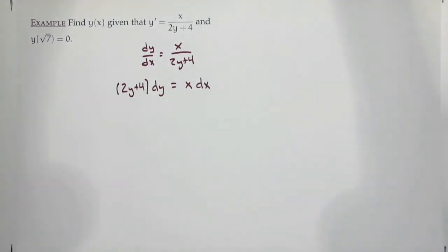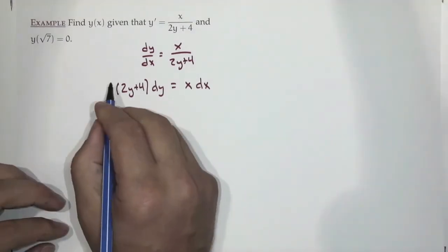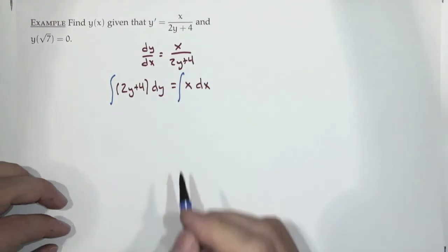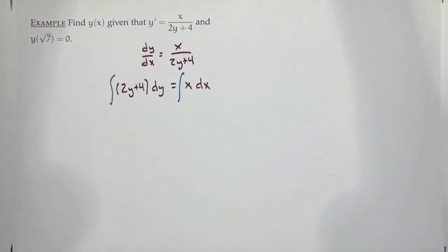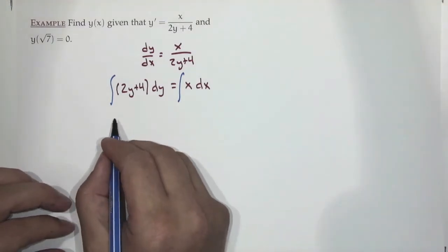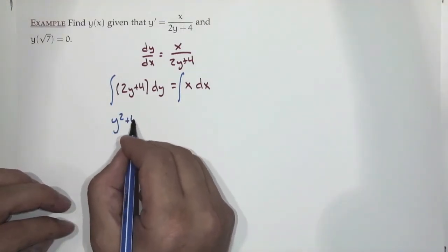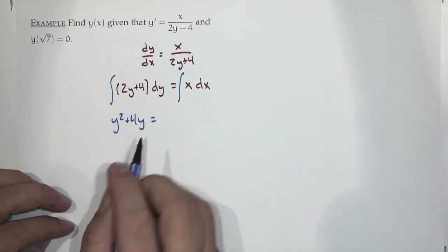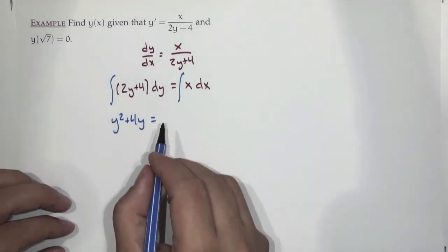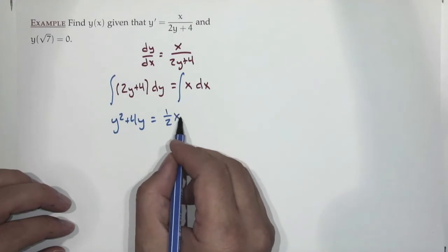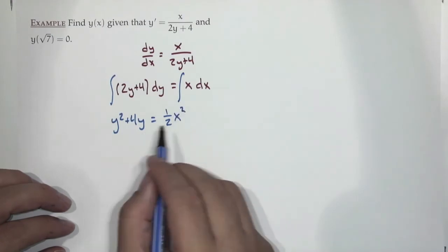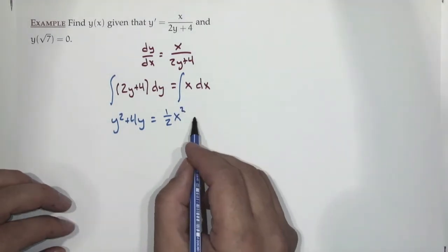What's next? Integrate. The integral of (2y+4) dy is y²+4y. The integral of x dx is (1/2)x². So y²+4y = (1/2)x² + C.